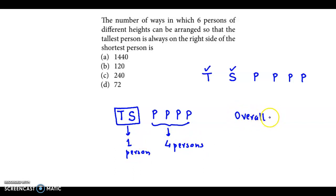So overall, we have 5 persons and 5 persons can be arranged in 5P5 ways and 5P5 is 5 factorial. And the value for 5 factorial is 120. So this arrangement is possible in 120 different ways. So the right answer is option B.